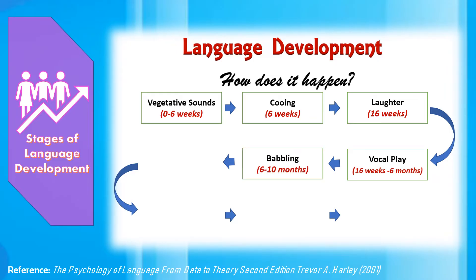From about the age of 6 to 9 months, infants start babbling. Babbling is distinguished from vocal play by the presence of true syllables — consonants plus vowels, often repeated. Around this time, the infant might start noticing that particular strings of sounds co-occur with particular situations. For example, whenever the sound 'mommy' is heard, mother is there.